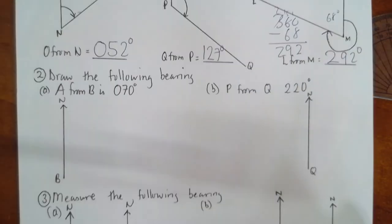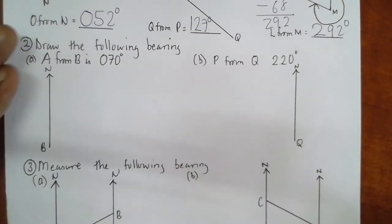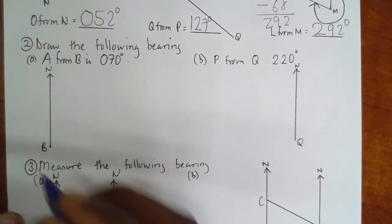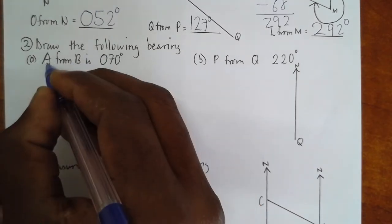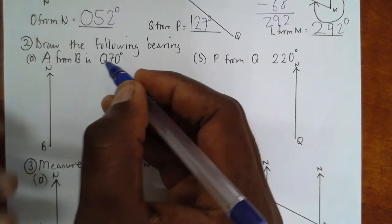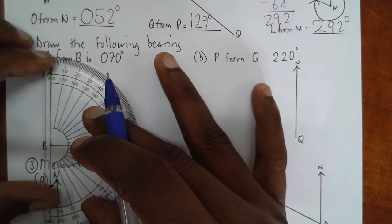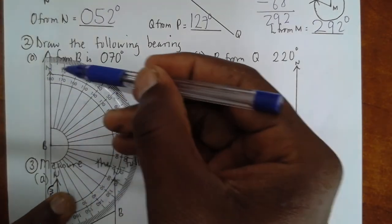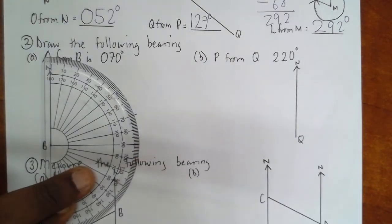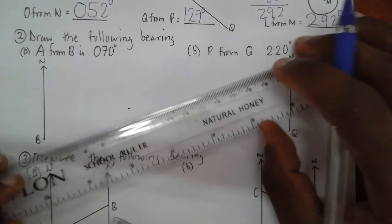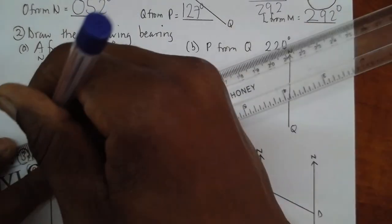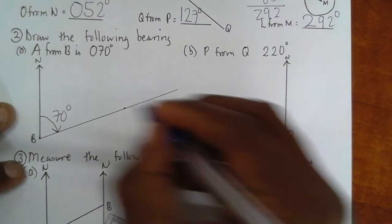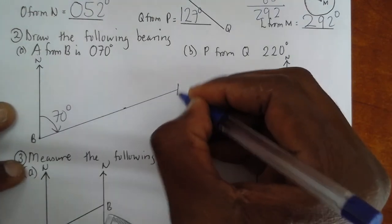Example number two. Draw the following bearings. As we have said, a good point we are given where to start. So, measure and draw the bearing A from B is 70. I put my protractor there. As you can see it. I measure from zero to 70. I keep a mark at 70. I remove my protractor and I connect with a ruler. Hence, the angle there will always be 70 and A will be anywhere along this line.